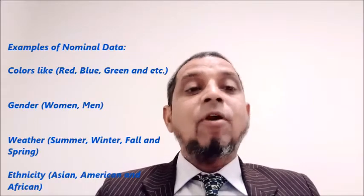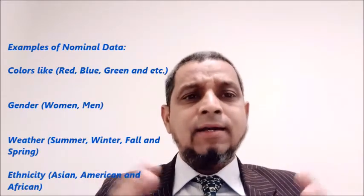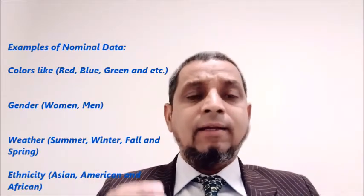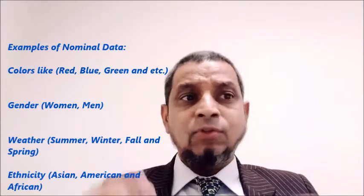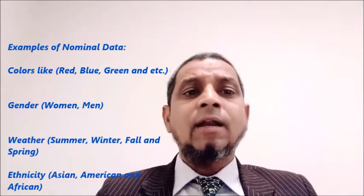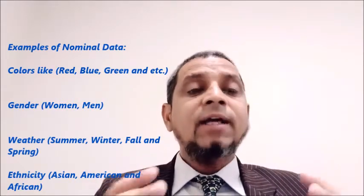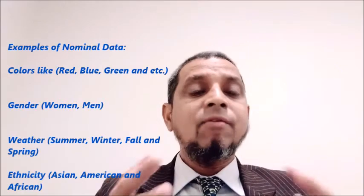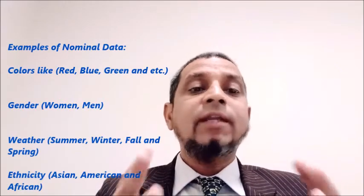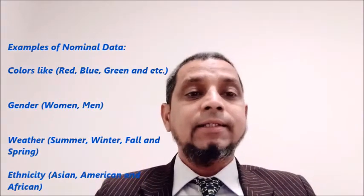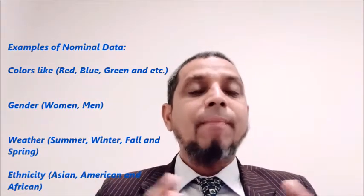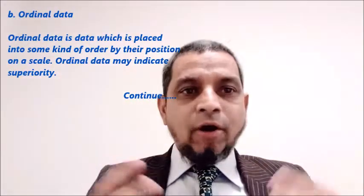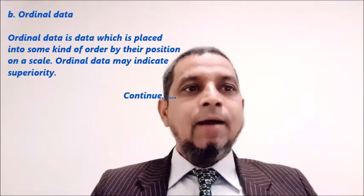Examples of nominal data include colors like red, blue, and green; gender like men and women; weather like summer, winter, fall, and spring; and ethnicity like Asian, American, and African. The second type is ordinal data.